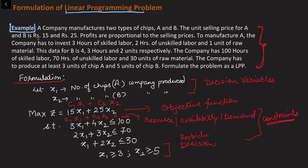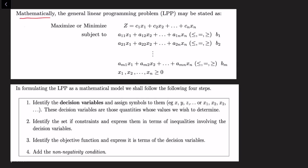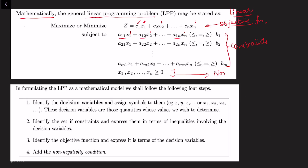Mathematically, the general linear programming problem has an objective function where costs are multiplied by decision variables whose degree is one — so it is linear. The constraints also have decision variables of degree one multiplied by constant coefficients. The third part is the non-negative restriction on decision variables, because practically a company either produces some quantity or produces nothing, so the least value is zero.